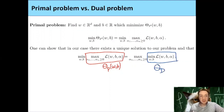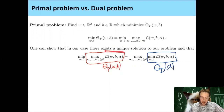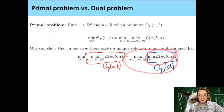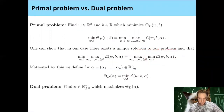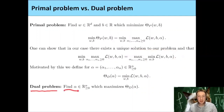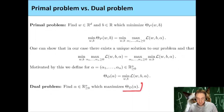We denote this by theta_d for dual, which is now just a function depending on alpha. In the primal problem, we minimize theta_p. In the dual problem, we maximize theta_d. The dual problem is: find these Lagrange multipliers — a vector of n positive real numbers — which maximizes this Lagrangian.